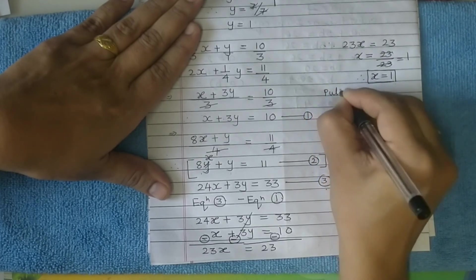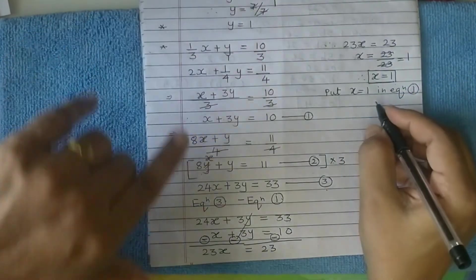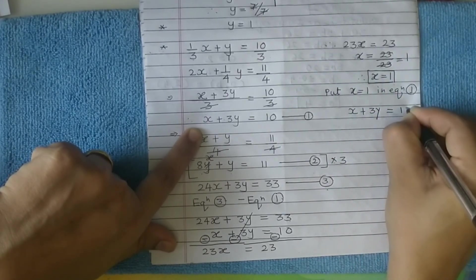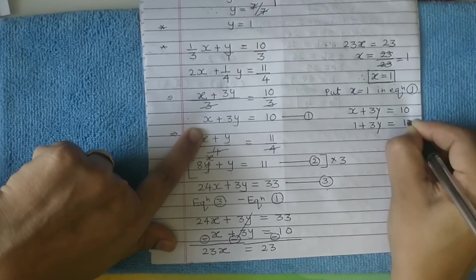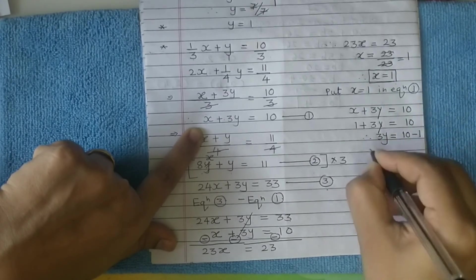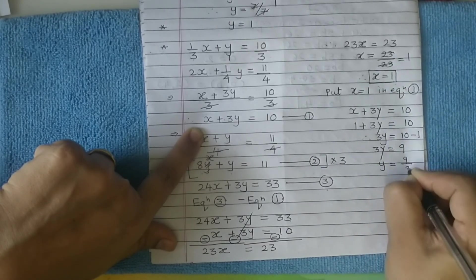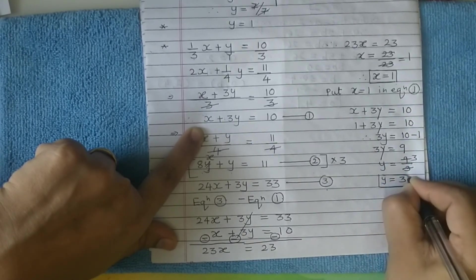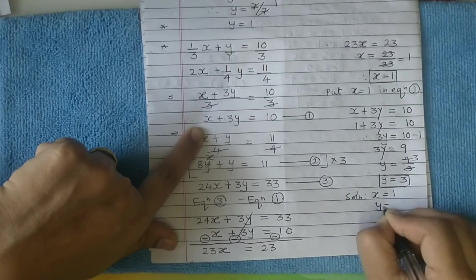Then again put x equals 1 in equation 1. What is equation 1? x plus 3y equals 10. So 1 plus 3y equals 10. Therefore 3y equals 10 minus 1. 3y equals 9. y equals 9 upon 3, which is 3. So your solution is x equals 1 and y equals 3.